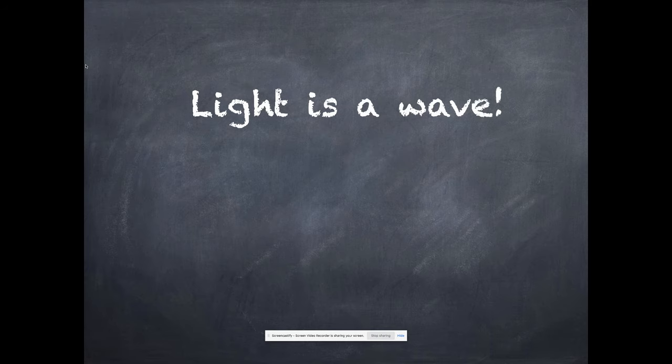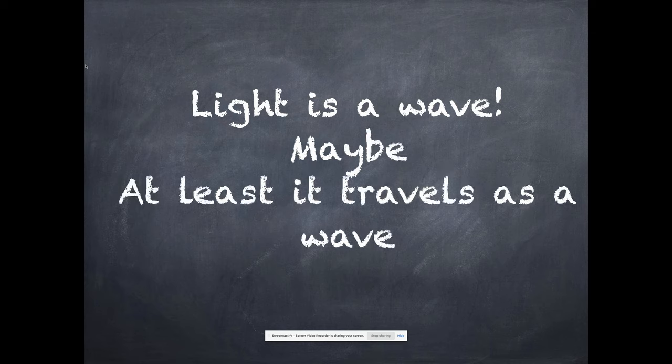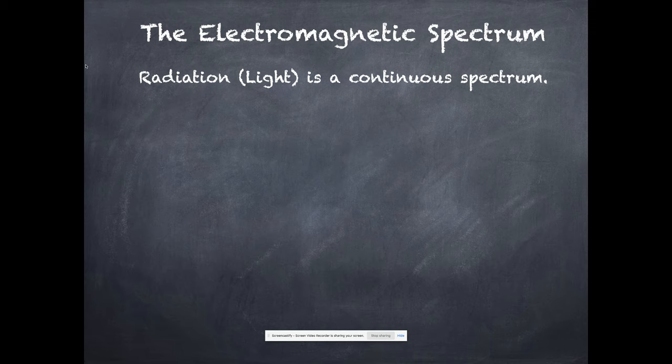Now we're going to work on the assumption that I've told you all this because light is a wave. Well, maybe it's a wave. It travels as a wave. So our electromagnetic spectrum, what we call radiation, which most of the time you just refer to as light, is a continuous spectrum.